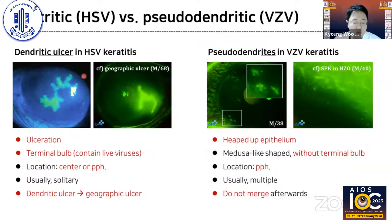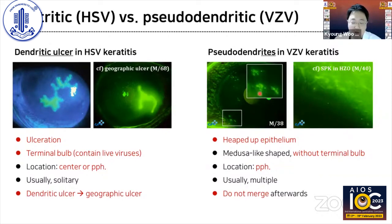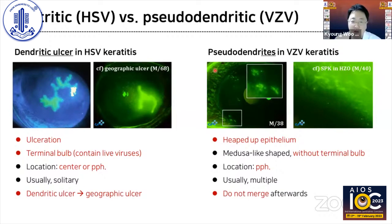The representative feature of HSV keratitis is the dendritic ulcer. It has terminal bulbs and contains live viruses. When the dendrites become united, they transform into a geographic ulcer. On the other hand, pseudodendrites may be seen in zoster keratitis. These pseudodendrites are heaped up in the epithelium and look like medusa. They do not have terminal bulbs and are usually located in the peripheral lesion.